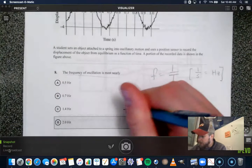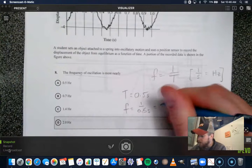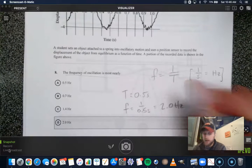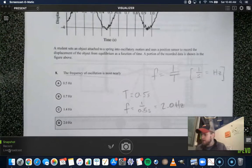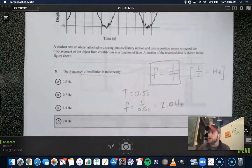To find the frequency, we need to invert that. So, one divided by 0.5 seconds gives us 2.0 hertz. Very straightforward. It's important here that you have the definition of frequency.